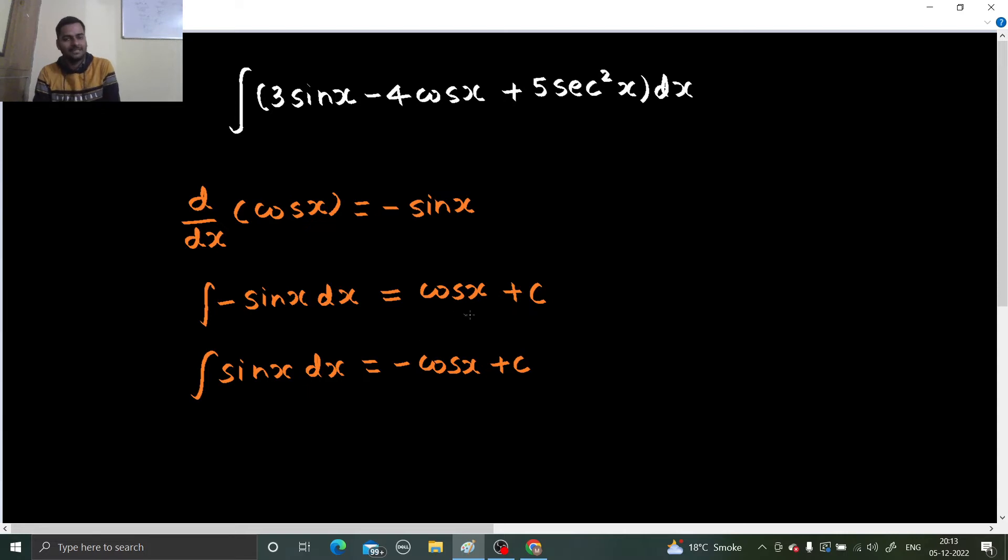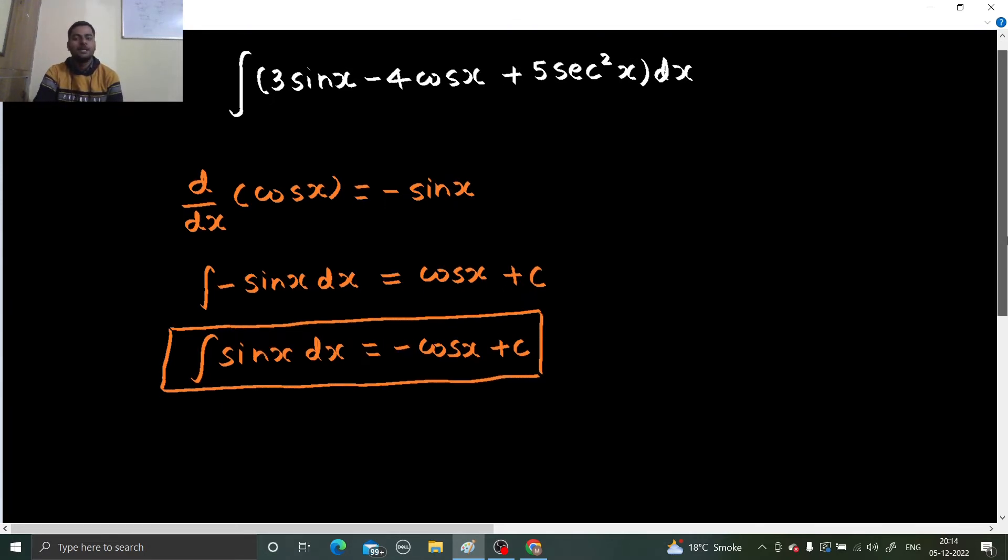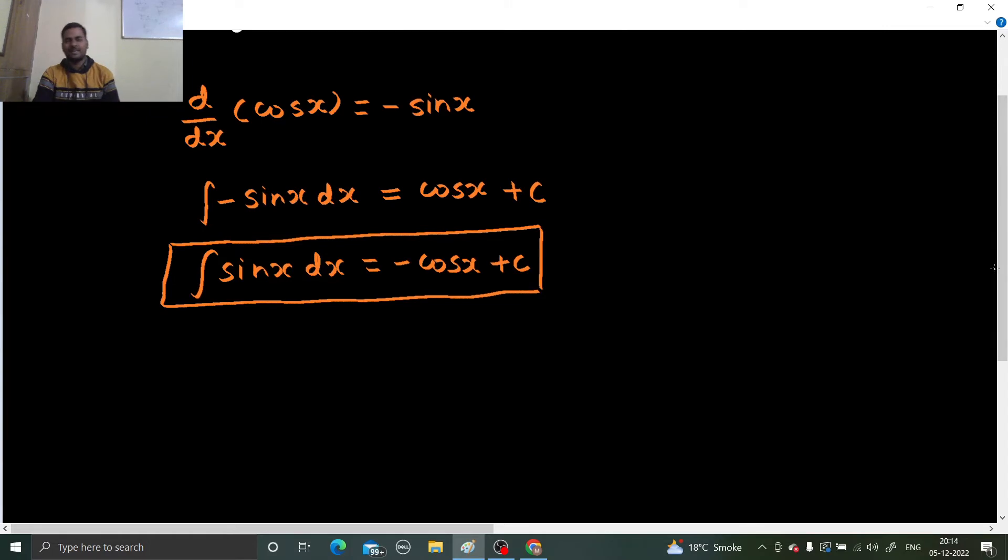You might argue that C also gets a minus sign—C and minus C you can name that as any other constant. So the first learning from this video is integral of sin x, which most of the time we confuse as cos x, but it is not cos x, it is minus of cos x. And every time you confuse, go back to your basics, go back to the derivative formula, and you will never do so.